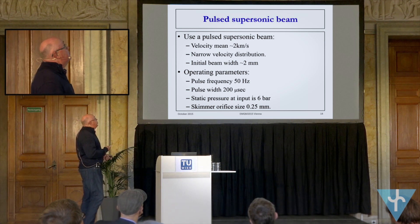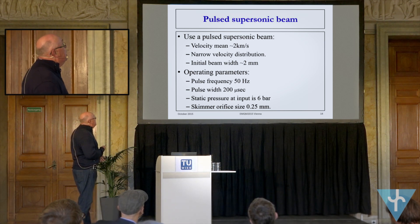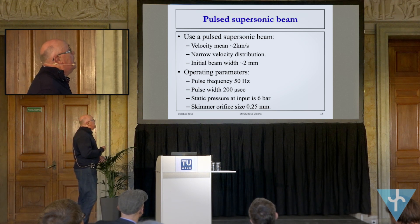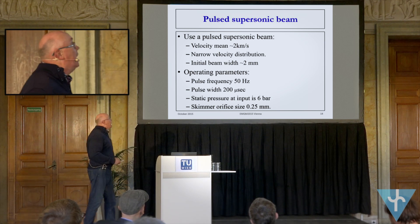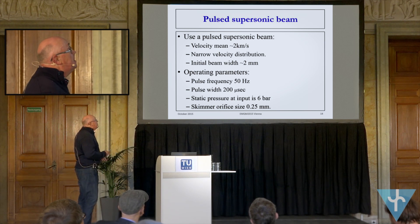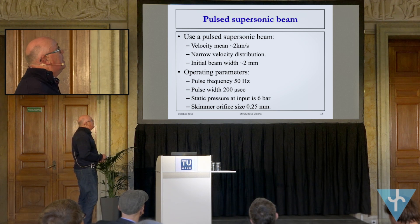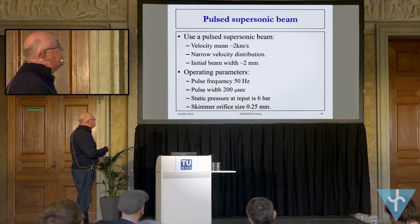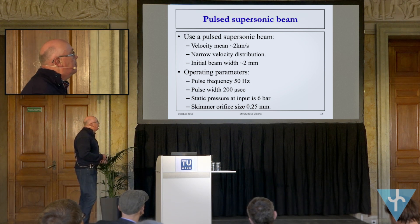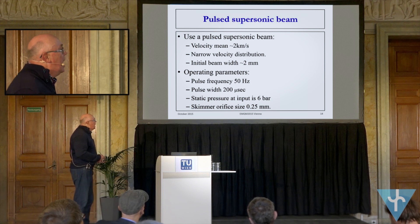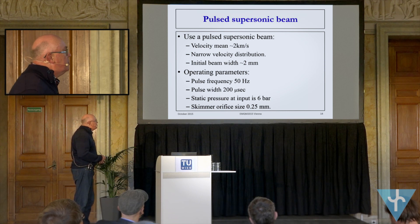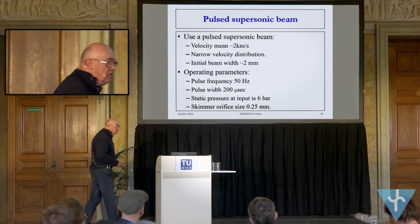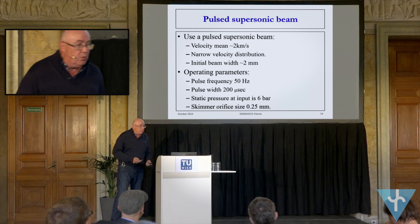Basically we're going to have a pulse of a supersonic beam with a velocity of about two kilometres per second. We want a narrow velocity distribution, which is why we want to pulse it. The initial beam width would be about two millimetres, but we want to try and bring that down. Pulse frequency will run around about 50 Hz, pulse width 200 microseconds. We need a static pressure of about six bar at the front end, and the original skimmer aperture is about a quarter of a millimetre.